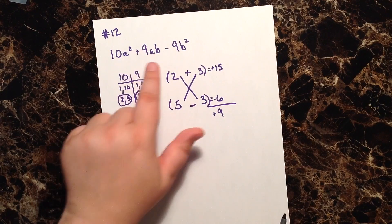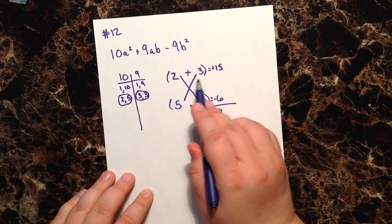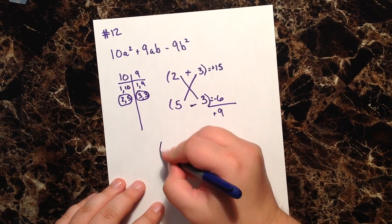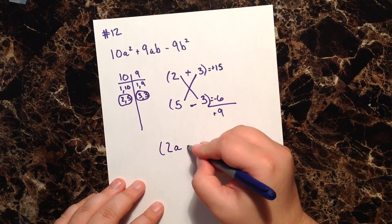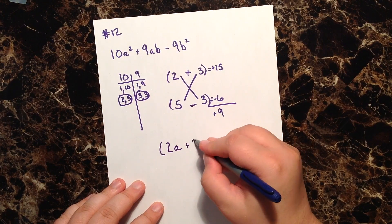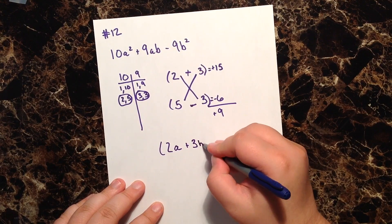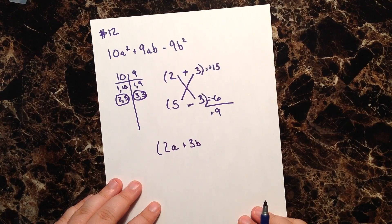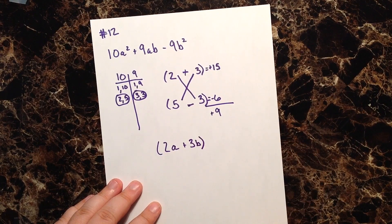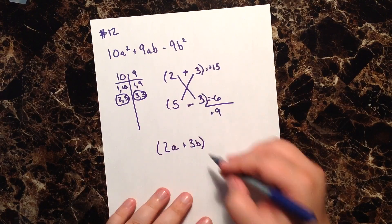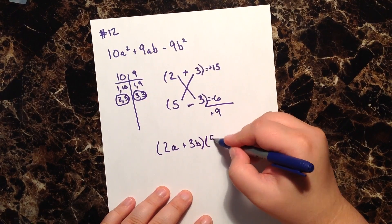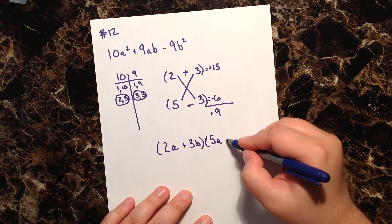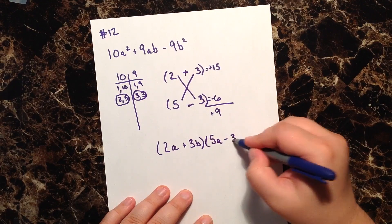Now, of course, we've got to add in our variables. So the 2 plus 3, this becomes 2a + 3b. We'll close. And then my 5 minus 3 becomes 5a - 3b.